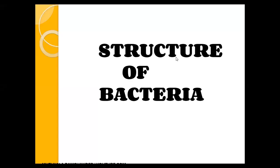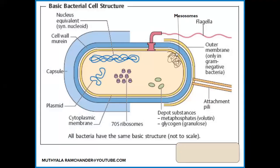This is the basic structure of a bacterial cell. The structure belongs to the bacillus type — bacillus bacteria are rod-shaped. Every bacterium contains the same basic structures. We will discuss the basic bacterial cell structure from outside to inside.